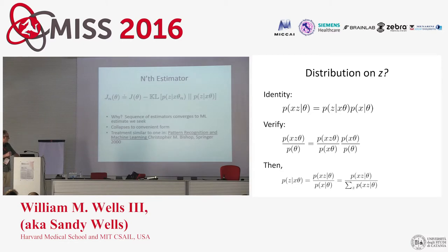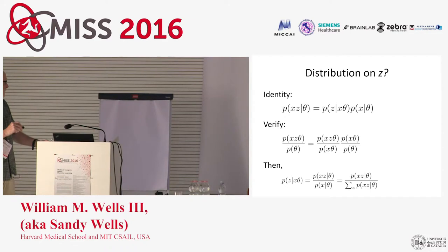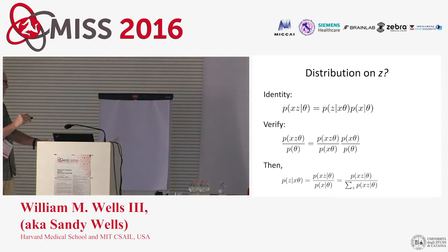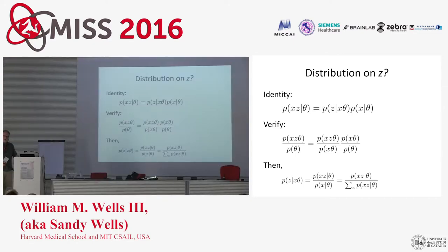About this distribution on Z: the KL term has this distribution on Z appearing twice. We can obtain it through identity — we can verify this just by writing out the definitions of conditional probability. After rearranging, it's essentially just Bayes' rule in action. Given the likelihood function we started with, we can get this distribution on Z through identities. It's definitely something we can construct given what we've got.